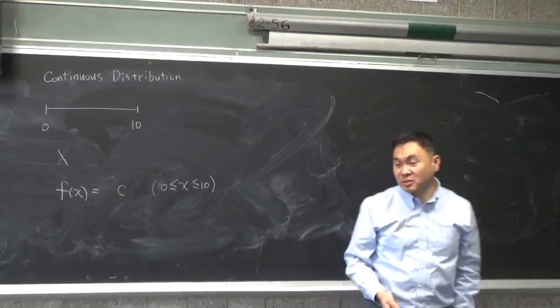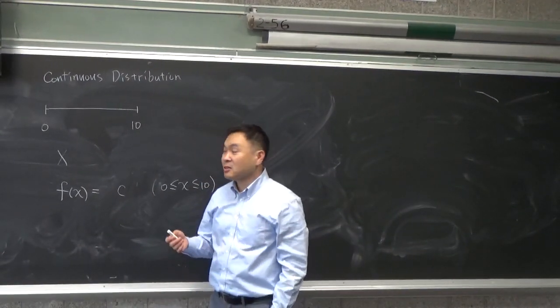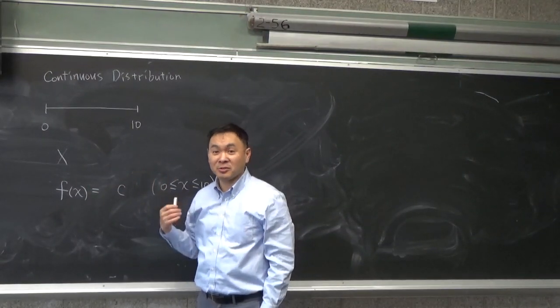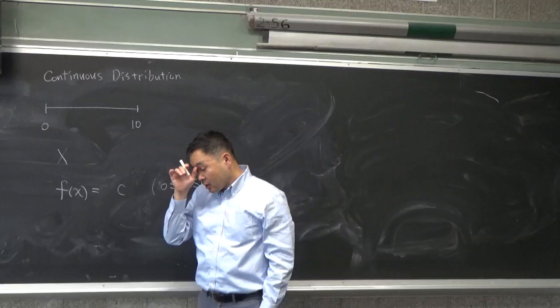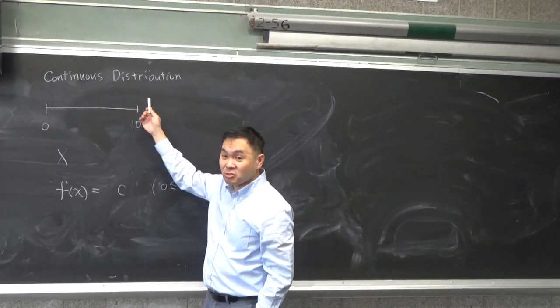Now we can even find out what this c is, because I know that if you add up all the probability, it has to add to 1. But notice that I titled this as continuous distribution.